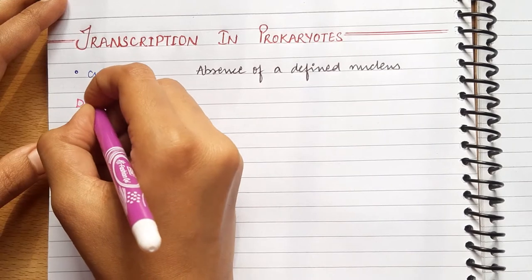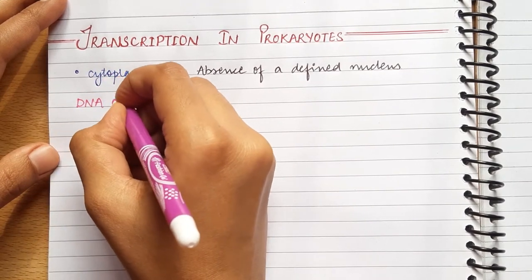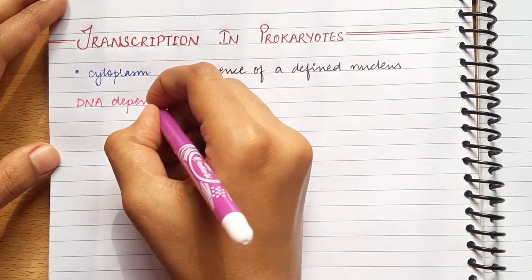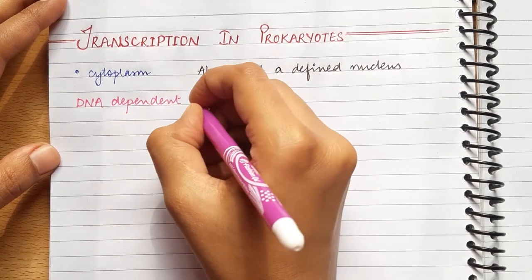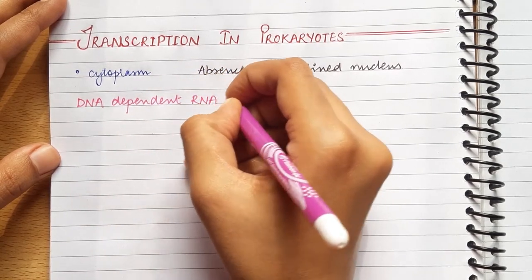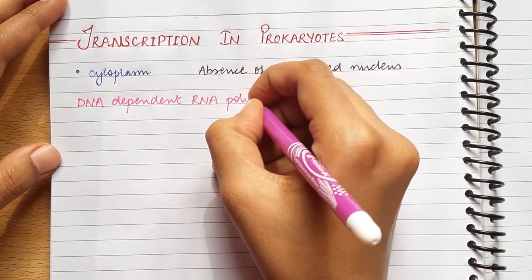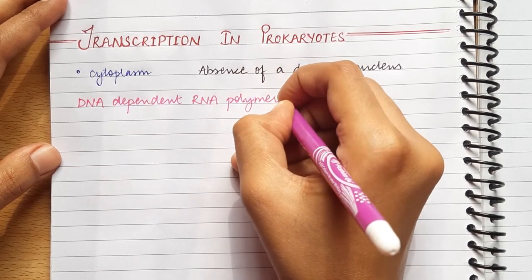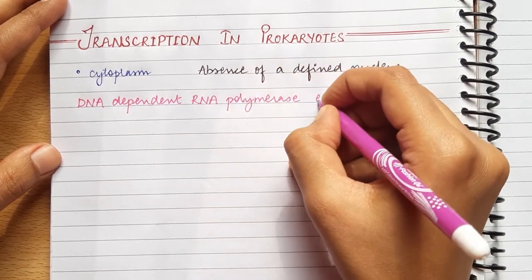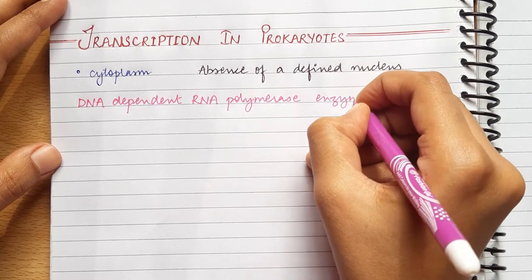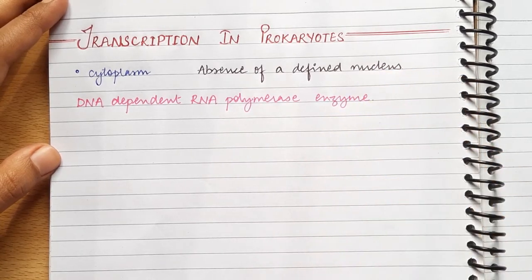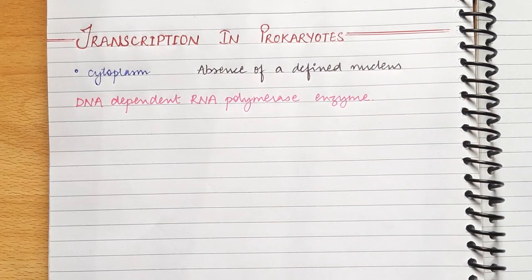Then the enzyme which is required during transcription in prokaryotes is DNA dependent RNA polymerase. As I told you in my previous video, prokaryotes have a single type of RNA pol enzyme while eukaryotes have three types of RNA polymerase enzymes, namely RNA pol 1, 2 and 3. You can check out my previous video for all the basic concepts of transcription.